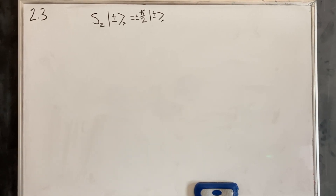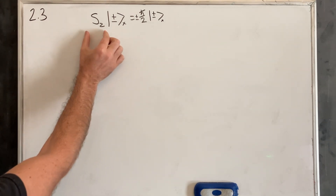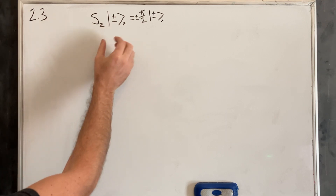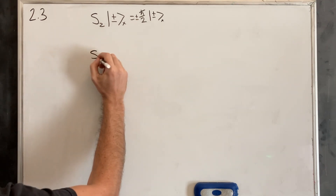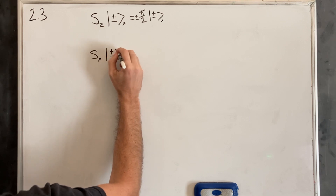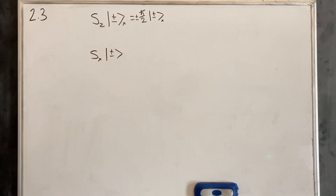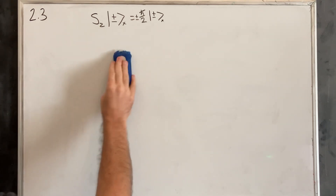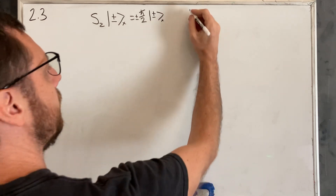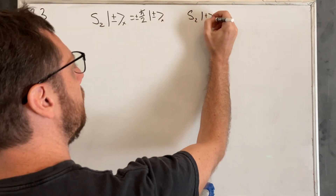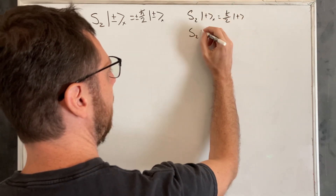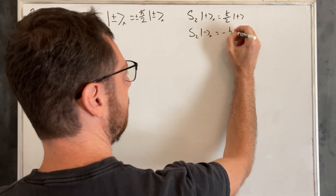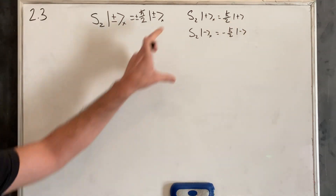So problem 2.3. I don't love the wording in the book, but basically what they're asking is to find the S_z operator when applied to the X basis. Before we found the S_x operator when acting on the Z basis, and now we're doing it the other way around. We know this is going to end up being two different things — S_z for spin-up in X equals ℏ/2 times |+z⟩, and S_z acting on spin-down in X equals −ℏ/2 times |−z⟩. So we just need to find S_z.